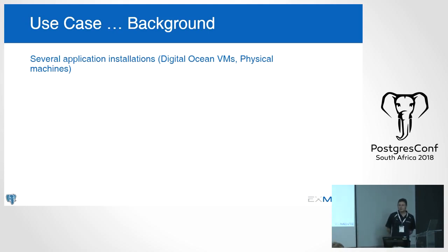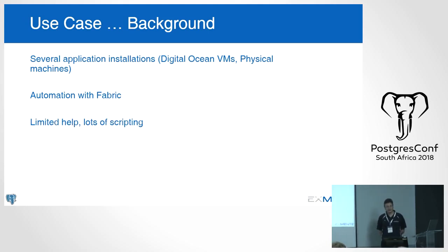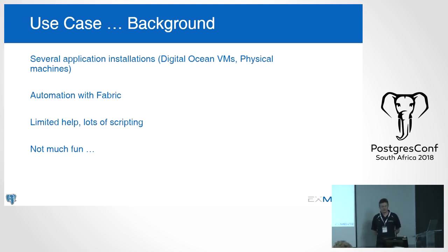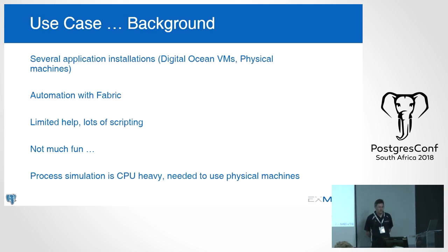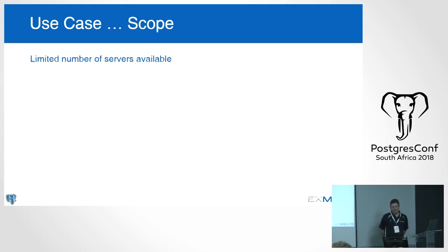We have several applications deployed to clients. We used to install them on DigitalOcean VMs and a few physical machines, and did automation with Fabric. We did use Fabric and it didn't really help us a lot — you've got to do a lot of Python scripting to use it. I said yesterday it was hell, and that's closer to the truth. I would not recommend Fabric if you can use Ansible.